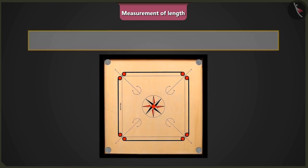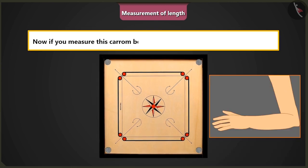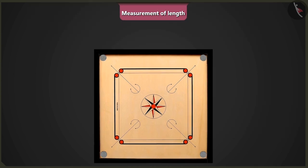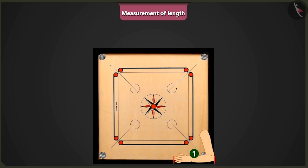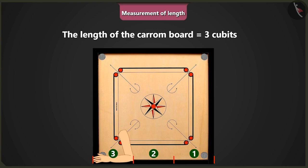Now if you measure this carom board using your arm, then what will be its length? Hmm, 1, 2 and 3. The length of this carom board is 3 cubit length of my arm.